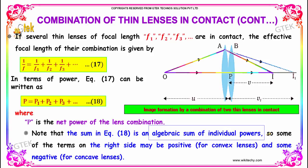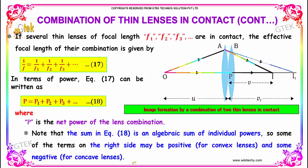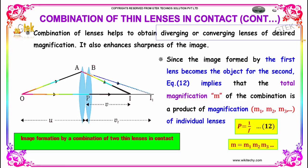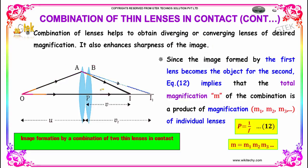Some of the terms on the right side may be positive, in the case of convex lenses, and some may be negative, indicating the impact of concave lenses. The combination of lenses helps to obtain diverging or converging lenses of desired magnification, which also enhances the sharpness of the image. Since the image formed by the first lens becomes the object for the second, the total magnification M of the combination is a product of magnifications M1, M2, M3, and so on for the individual lenses.